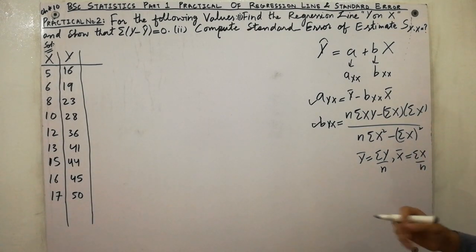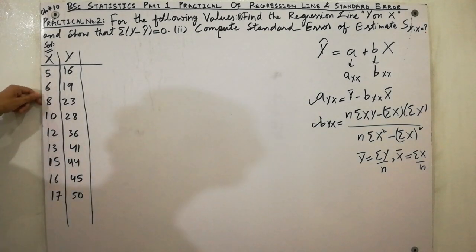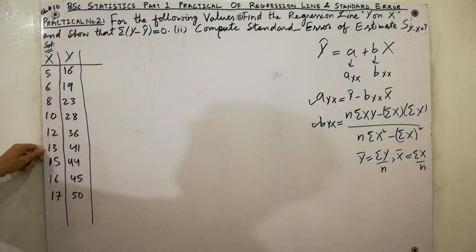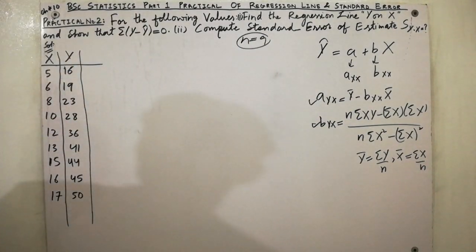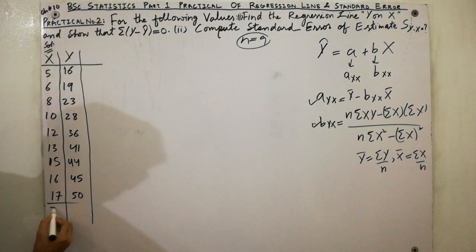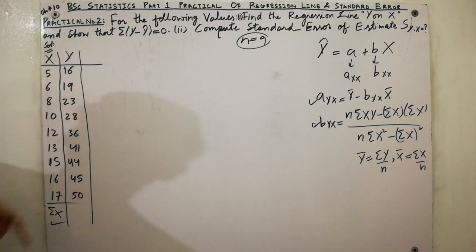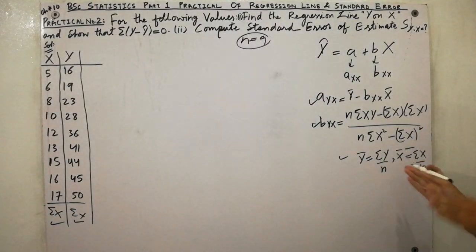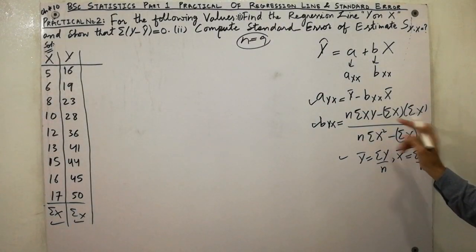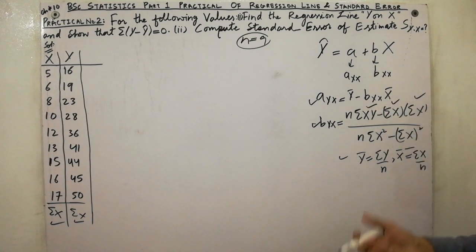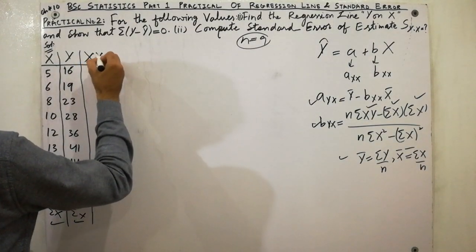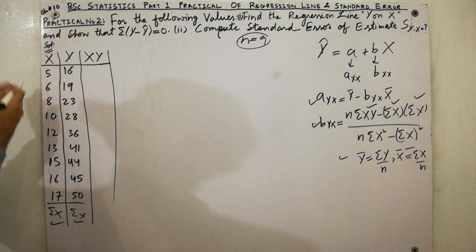First, count the number of values: 1, 2, 3, 4, 5, 6, 7, 8, 9 — so n = 9. Now calculate Σx and Σy by adding all x and y values respectively. From those, you can easily calculate ȳ and x̄. Next, calculate xy — simply multiply each x value by its corresponding y value.